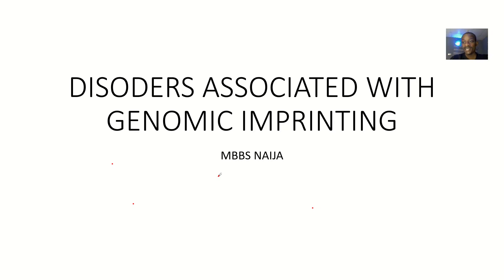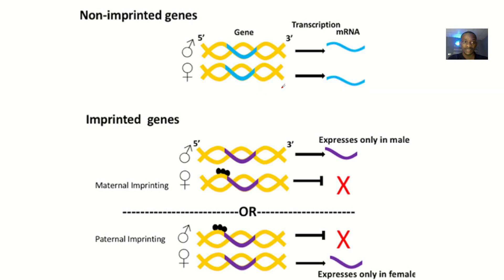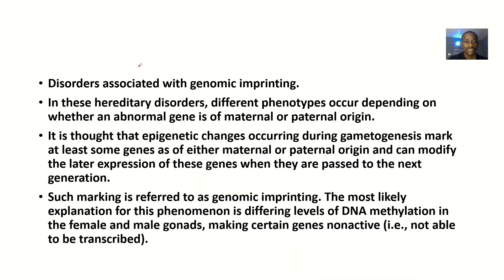We actually spoke about genomic imprinting in our previous lectures, and we said that it's a beautiful process. So actually trying to look at if this process does not work as it should, what are the possible disorders that could result from this? So that's the disorders associated with genomic imprinting.